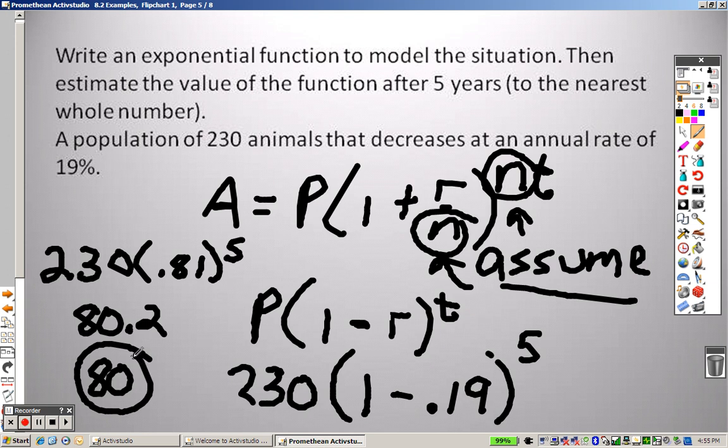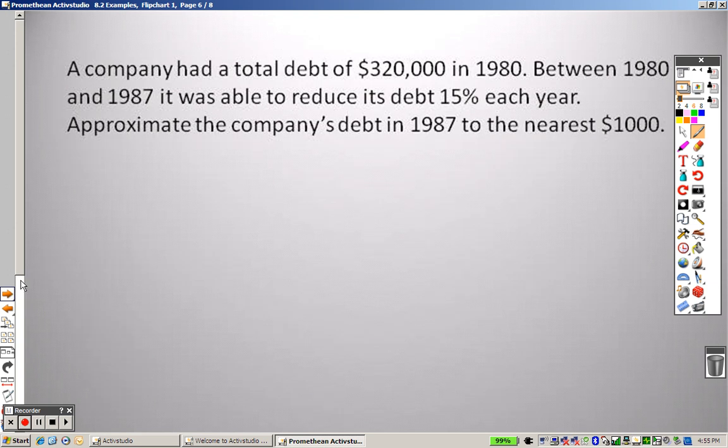So that means within five years, if the population of animals was decreasing, it would be 230 down to 80.